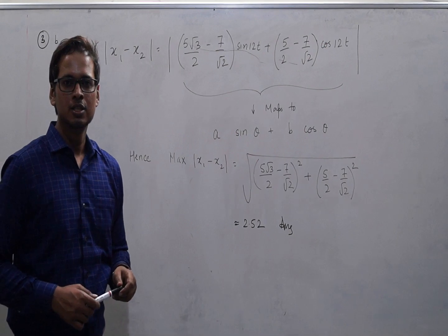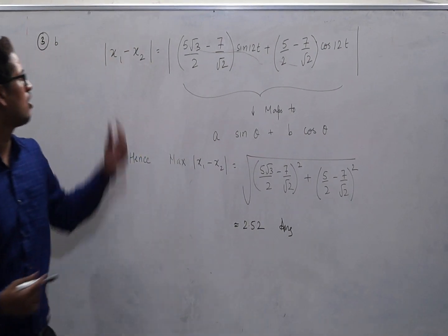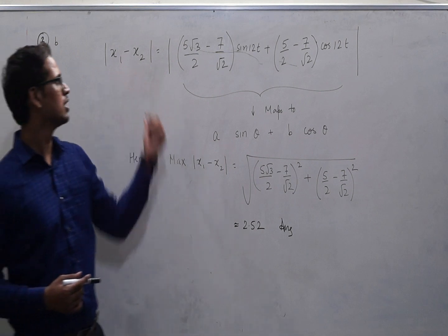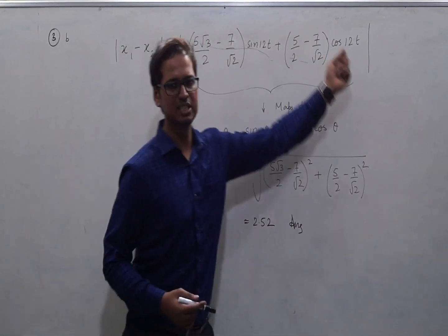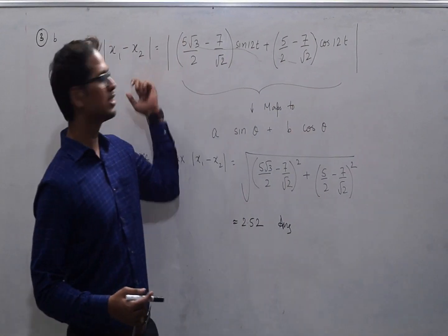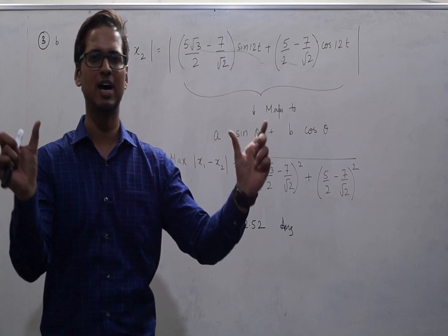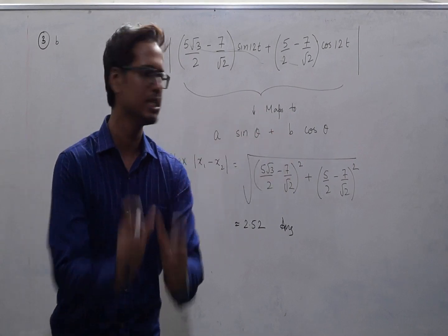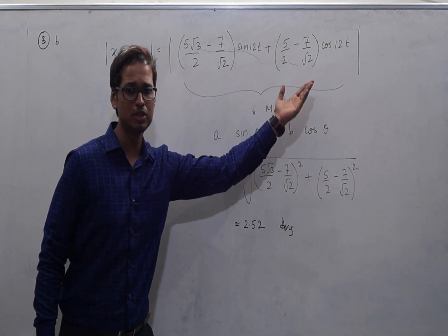So finally coming to the question, how to find the maximum value of modulus x1 minus x2. So when we do x1 minus x2 modulus, we are left with this expression. We are using the data which we obtained from part a of the question. We got a value for x1, we got a value for x2, we subtracted it. We got this expression. And now we have to find the maximum value for this.